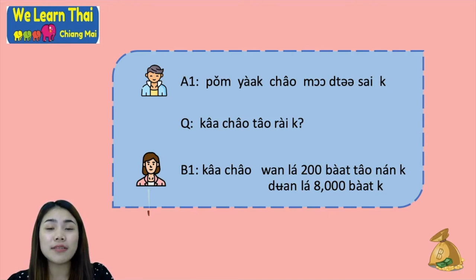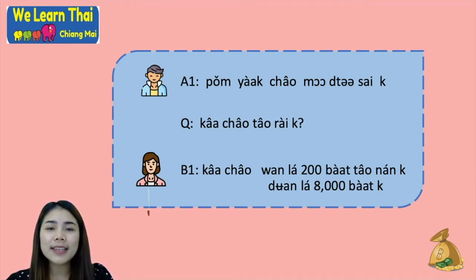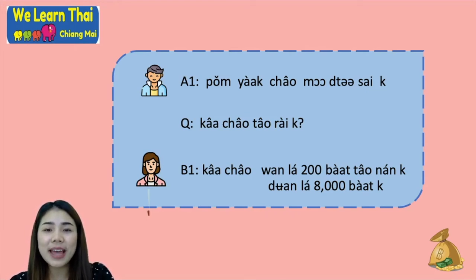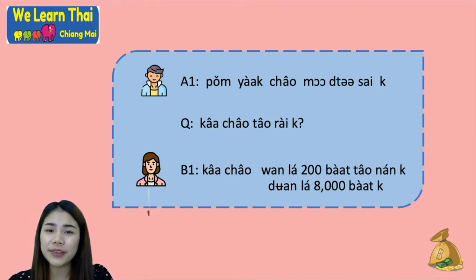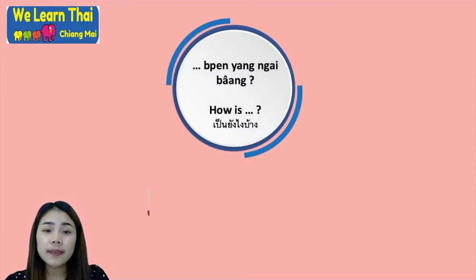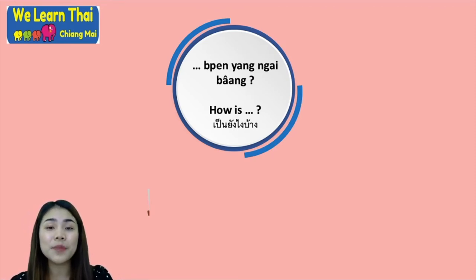For the answer you might hear: ค่าเช่าวันละสองร้อยบาทเท่านั้นค่ะ — the rental fee is only 200 baht per day, or ค่าเช่าเดือนละ 8,000 บาทค่ะ — 8,000 baht per month. You use เท่านั้น when you think the price is not expensive. Next, when you want to ask how something is — a house or something you rent or buy — you can use เป็นยังไงบ้าง.